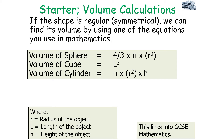The volume of a sphere is 4/3 times pi times r cubed, where r is the radius of the object. The volume of a cube is l cubed, where l is the length. The volume of a cylinder is pi times r squared times h, where r is the radius and h is the height of the object.